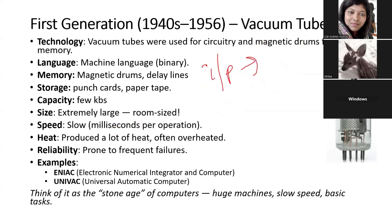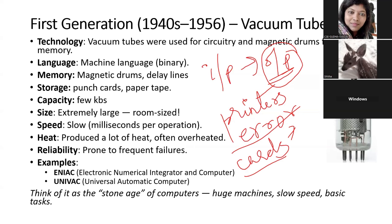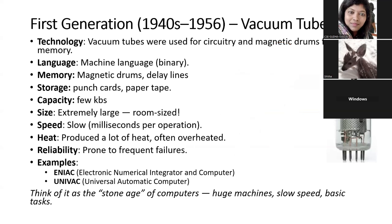When errors occurred, programmers had to re-punch the cards and feed them back into the machine. Rectifying errors and fixing bugs was not easy in the first generation. Examples of first generation computers include ENIAC (Electronic Numerical Integrator and Computer) and UNIVAC (Universal Automatic Computer).